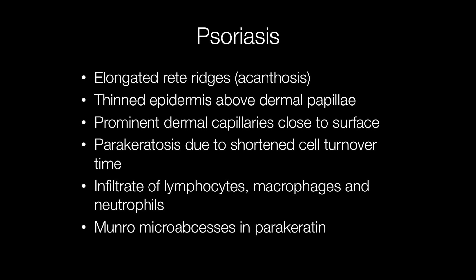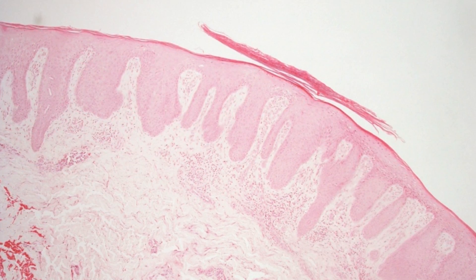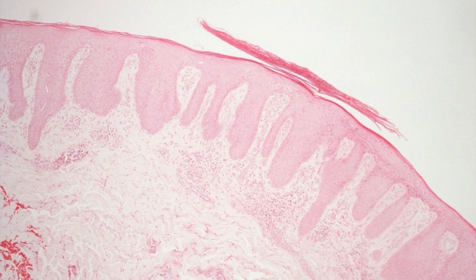The affected skin also contains a mixed inflammatory infiltrate composed of lymphocytes, macrophages and neutrophil polymorphs. A useful diagnostic feature of psoriasis is the presence of Munro microabscesses in the parakeratosis — these are collections of neutrophil polymorphs in the parakeratosis. This is a low power histology image of skin affected by psoriasis.